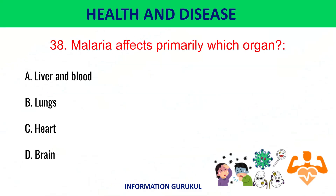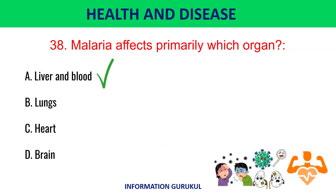Malaria affects primarily which organ? The liver and blood.